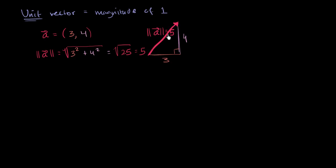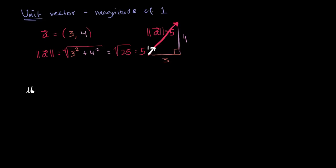So this is clearly not a unit vector — it has a magnitude of something other than 1. But let's say we wanted to construct a unit vector that has the same direction as a but has a length of only 1. We want a vector that goes in the exact same direction but has one fifth the magnitude. If we scale everything down by a fifth — multiply each of the components of vector a by a fifth, or divide each by the magnitude of a — we can construct this unit vector. Let's call it u for unit vector.